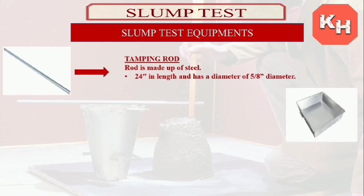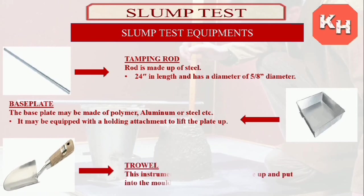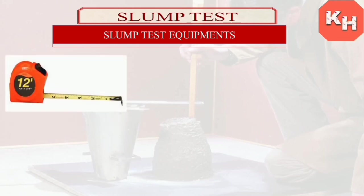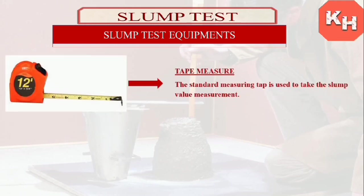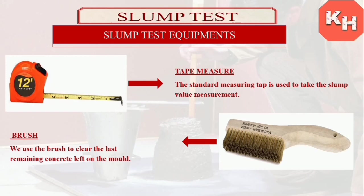The base plate may be made of polymer, aluminum, or steel, and may be equipped with a holding attachment. The trowel is used to lift and place concrete into the mold. The steel measuring tape is used for measuring the slump value. The brush is used to clear any remaining concrete left on the mold.